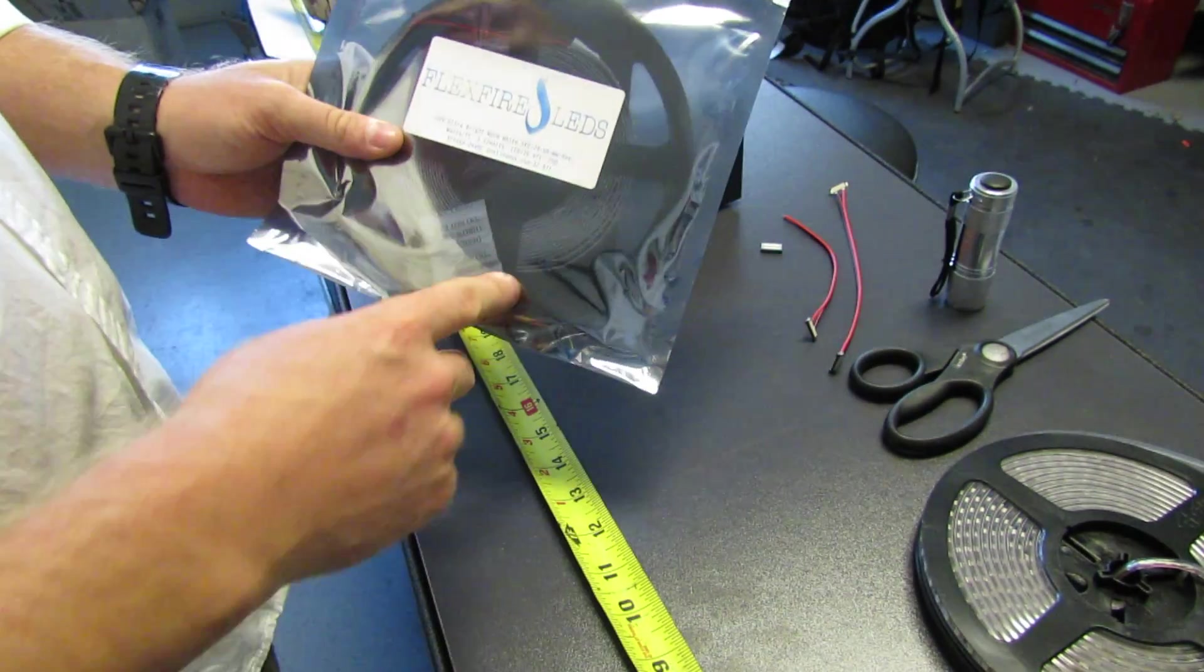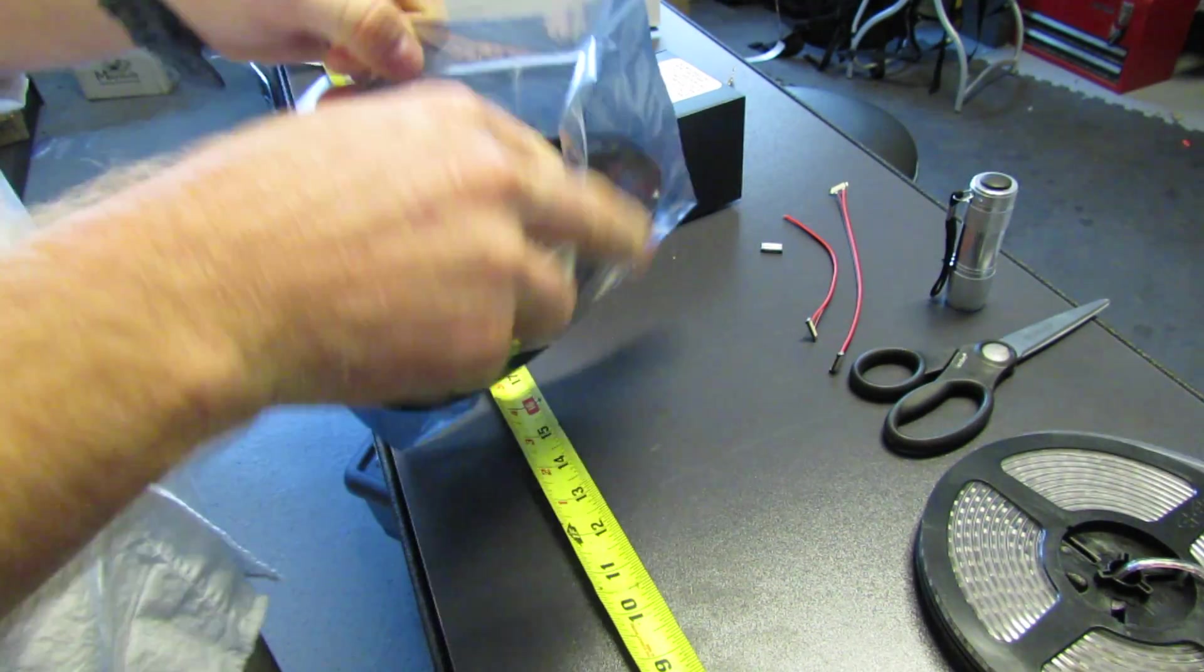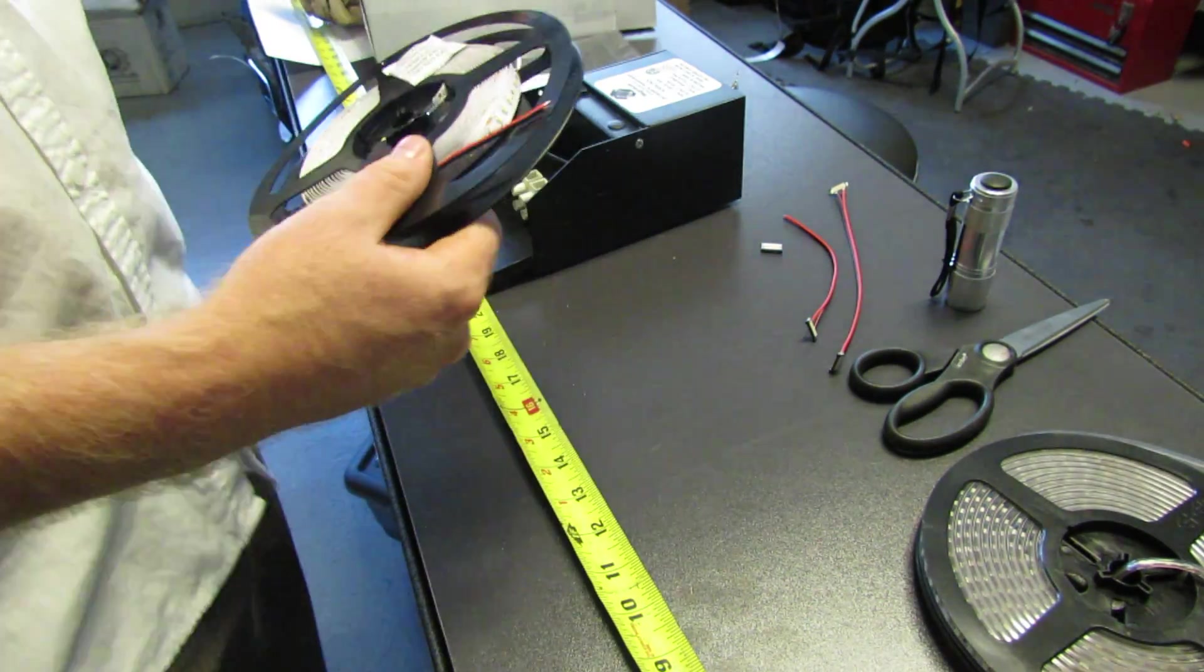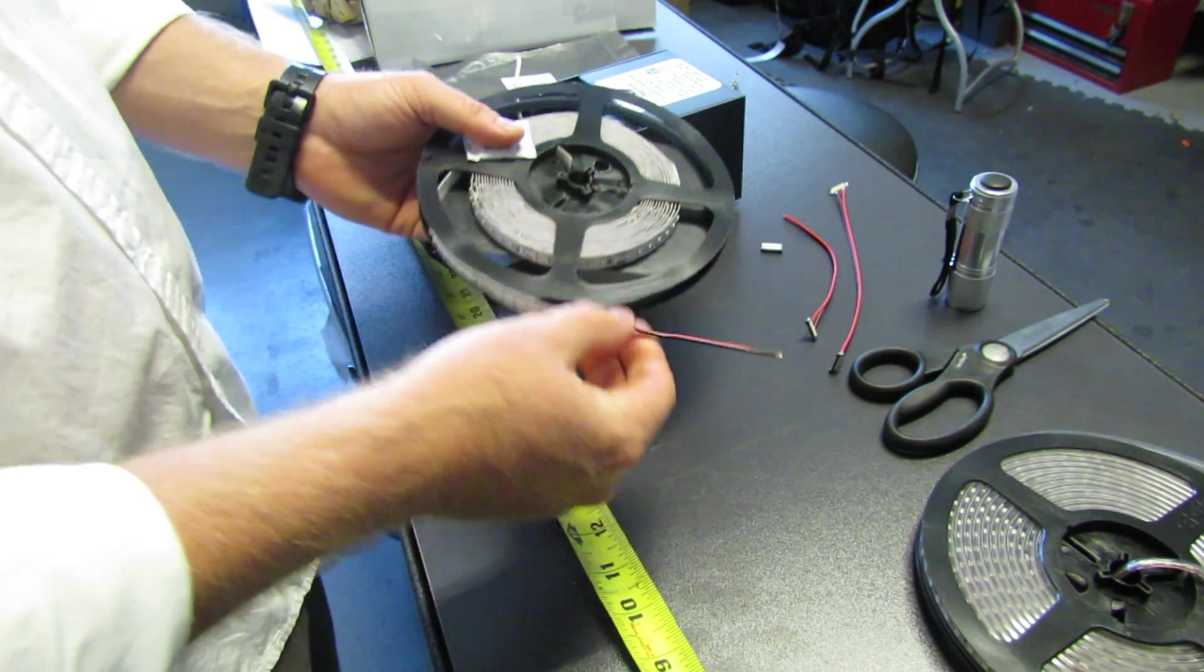So the strips are going to come in packages of five meters. You pull this out, it has one pre-soldered end on it. So one side is going to already have the wires coming off.